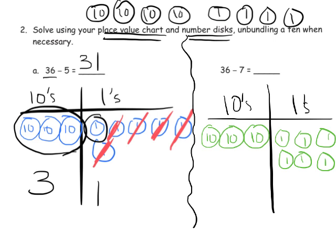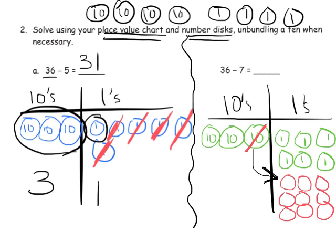Now here's the key thing, though, is we need to take away seven. Well, we only have six. So what we need to do is we need to take one of these tens, and we need to cash it in. So I'm going to cash this 10 for one, two, three, four, five, six, seven, eight, nine, ten. Ten ones. So I'm cashing in the 10 for 10 ones. And now I can subtract seven.